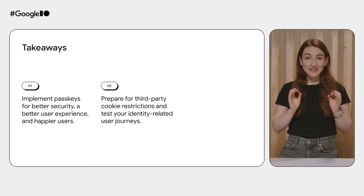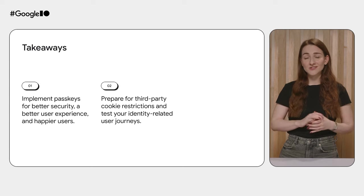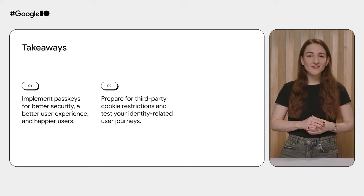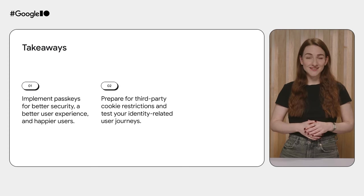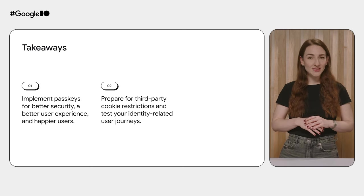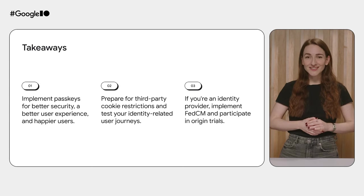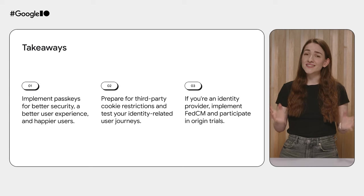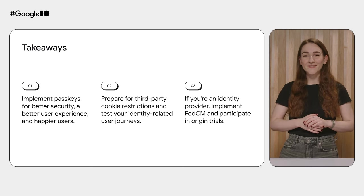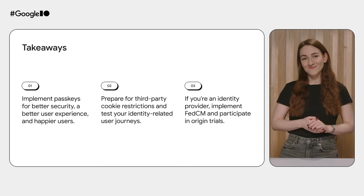Chrome is dedicated to both protecting people's privacy online and giving companies and developers tools to build thriving digital businesses. With third-party cookie restrictions on the horizon, make sure you're ready by auditing your identity-related user journeys and migrating away from any third-party cookie dependencies. To learn more, see the I/O session on what you need to know about third-party cookie deprecation. And if you're an identity provider who wants to provide a privacy-focused federated identity solution integrated with the web platform, you should implement FedCM — check out the origin trials to get involved with the latest features. Thanks for watching.